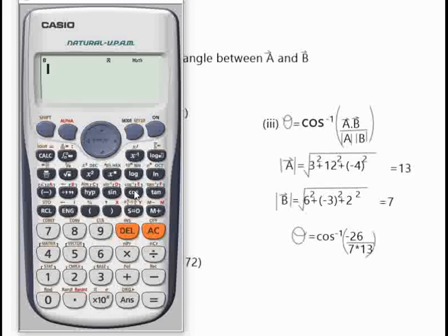We have shift cos to have cos inverse and there you have a fraction which is minus 26, forward button, 7, multiply by 13, forward button, close bracket. So we've actually inputted exactly what we have in the equation in our calculator. It's equal to, we have 106.6 degrees as our final answer.